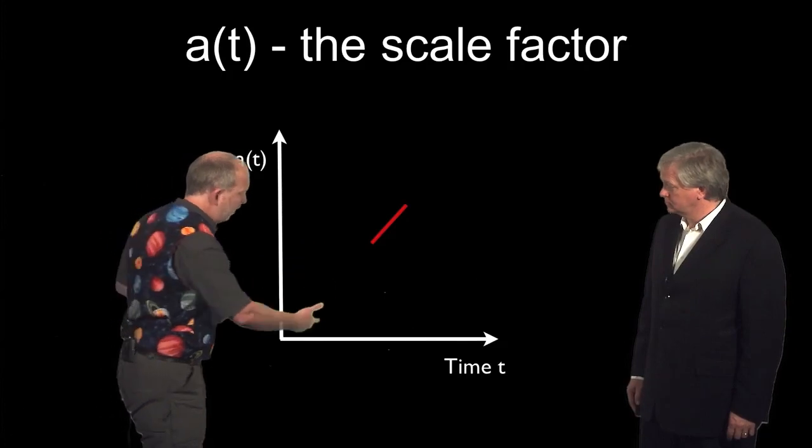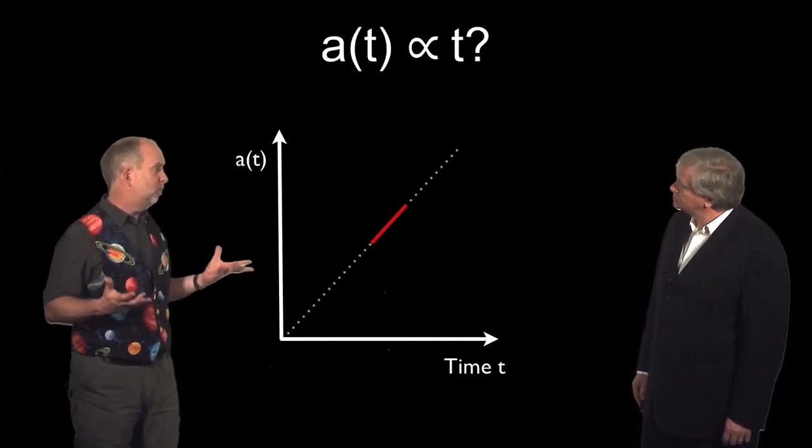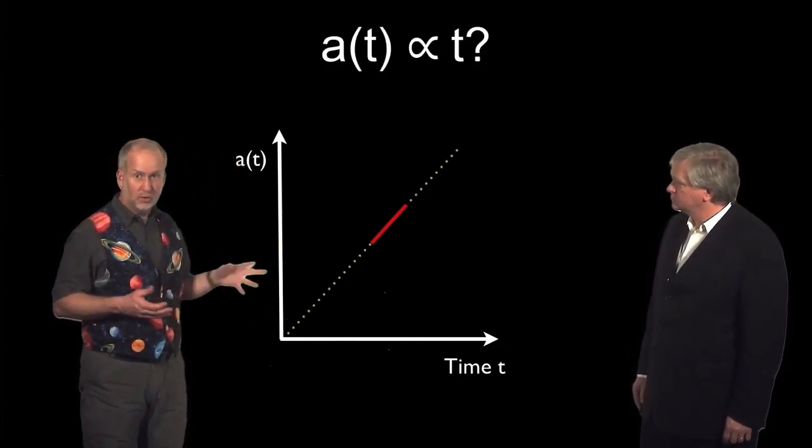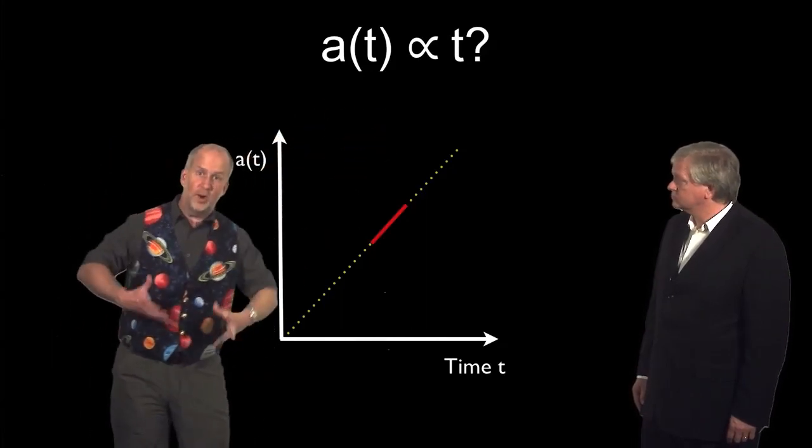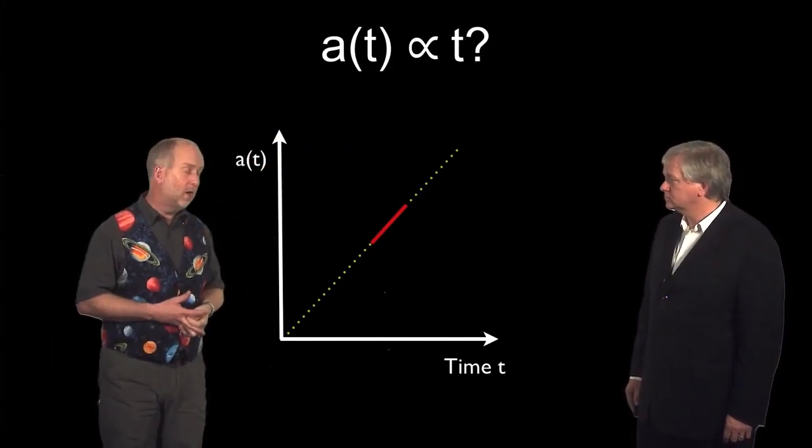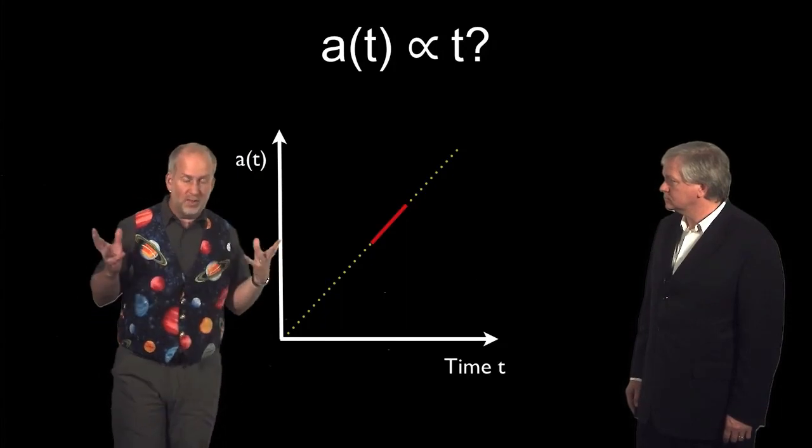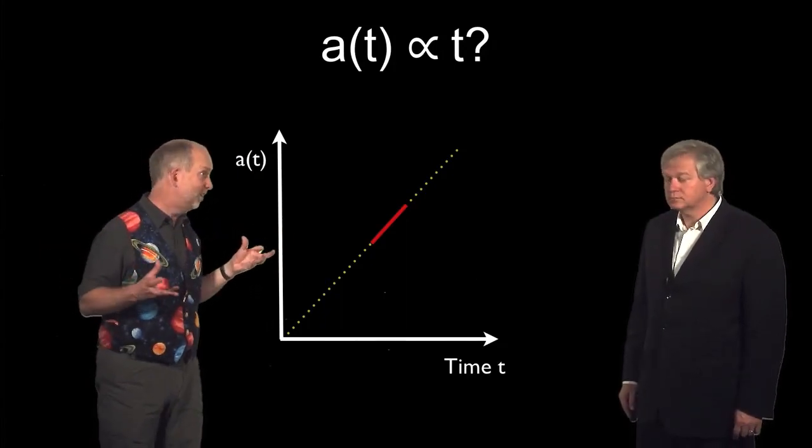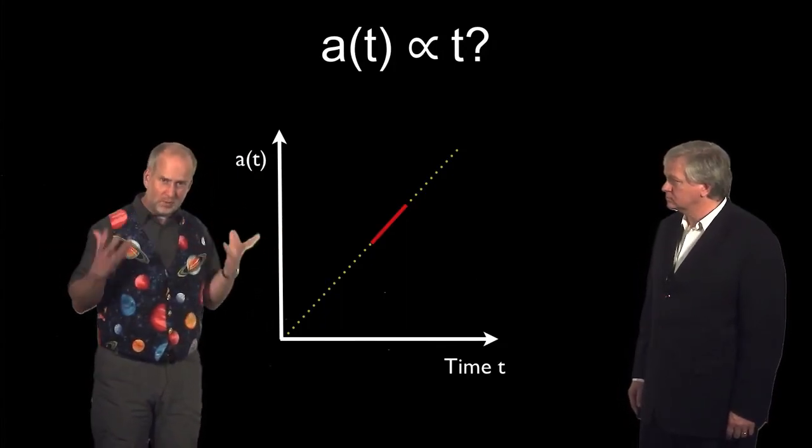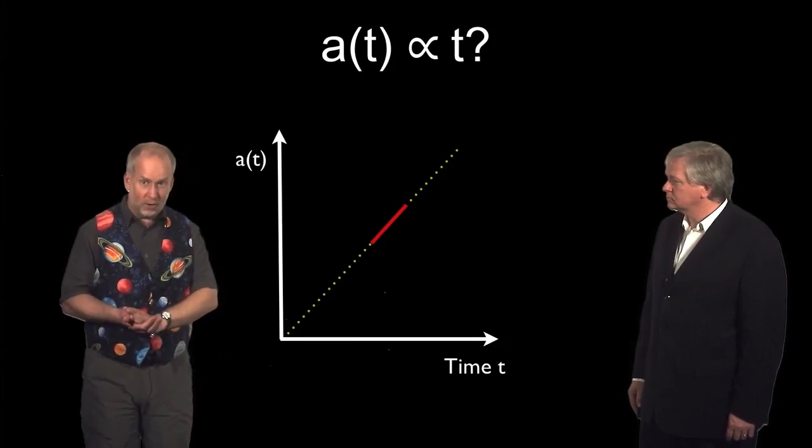But what does it do earlier and later? Well, the simplest possible assumption would just be this, that A of T is proportional to time, so a linear relationship, a straight-line relationship. This actually isn't possible. This would only be the case if the universe didn't have any forces inside it. But let's look at the consequences of this for a moment.